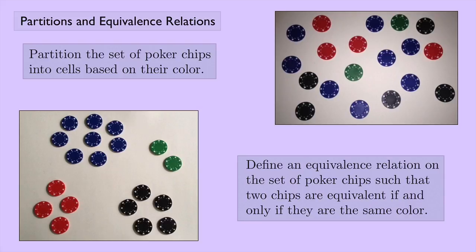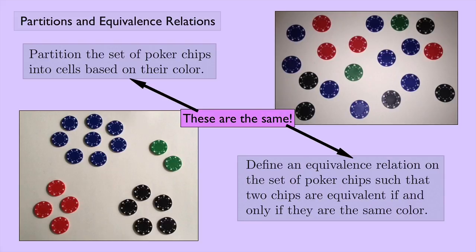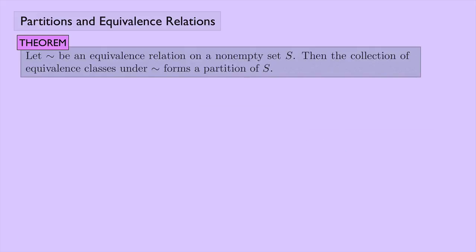Something that looks like this. That looks like the same thing — and in fact, it is. These are the same thing. A partition determines an equivalence relation just as an equivalence relation determines a partition. Here's a theorem: let tilde be an equivalence relation on a non-empty set S. Then the collection of equivalence classes under tilde forms a partition of S. In other words, an equivalence relation determines a partition.